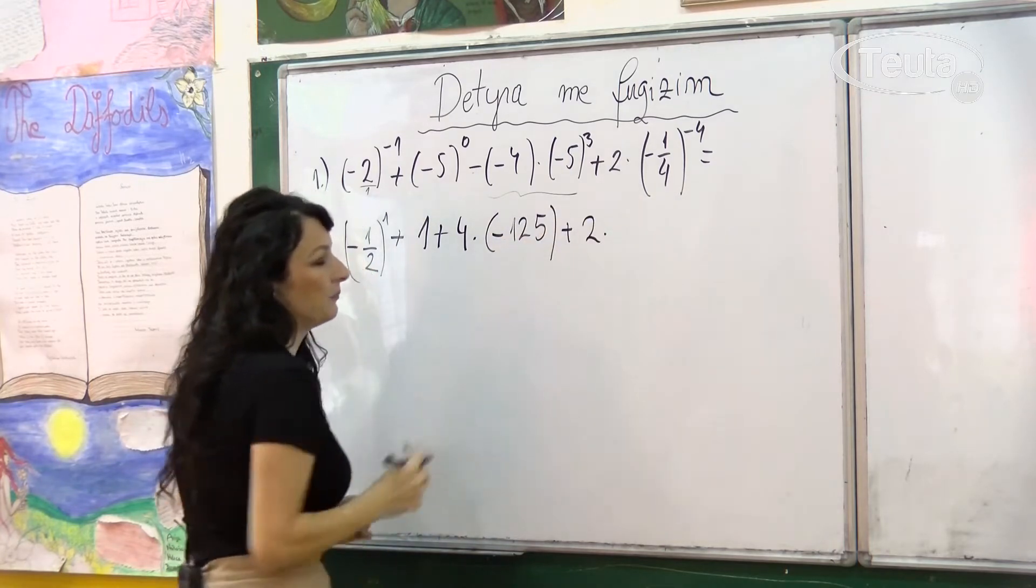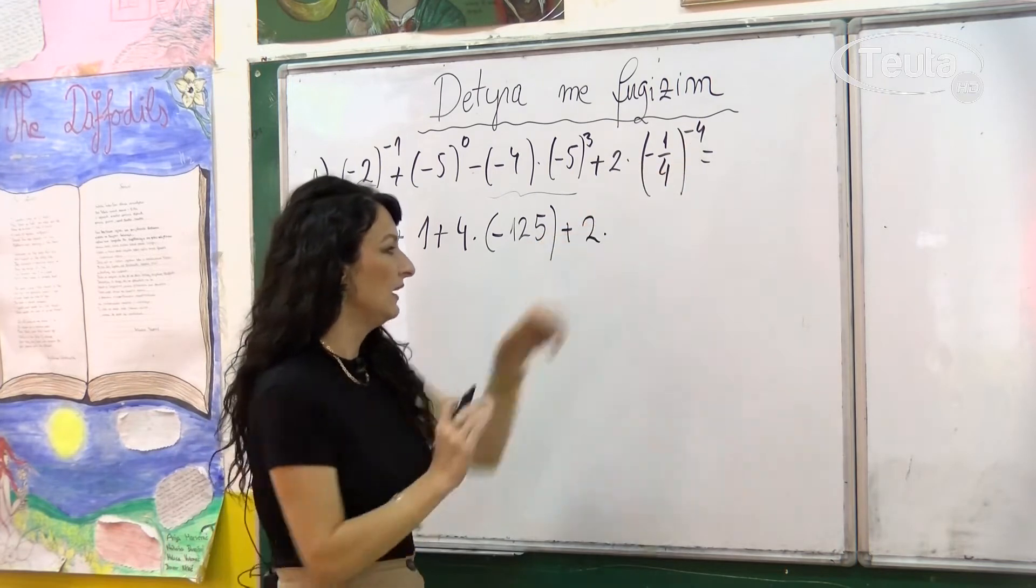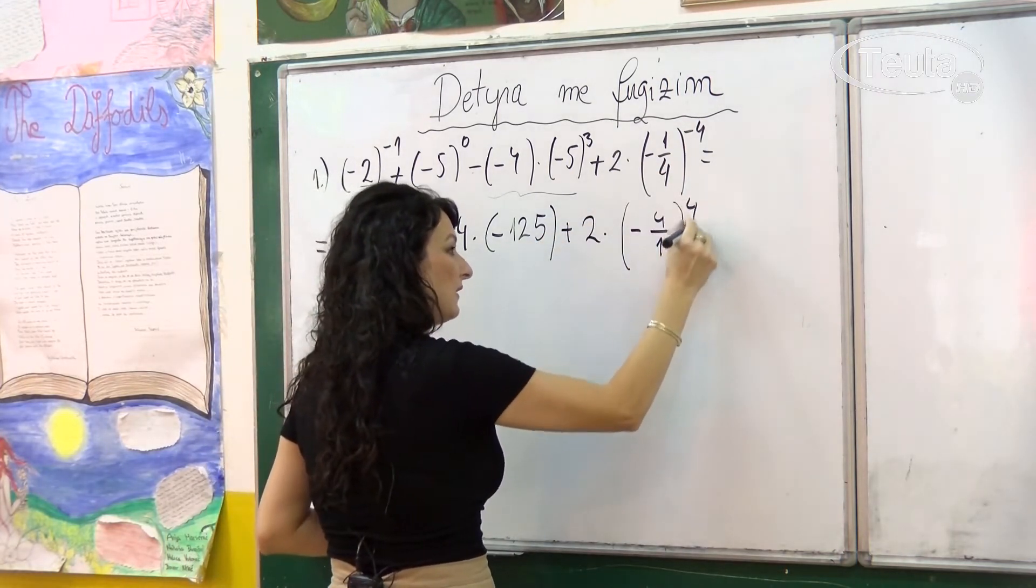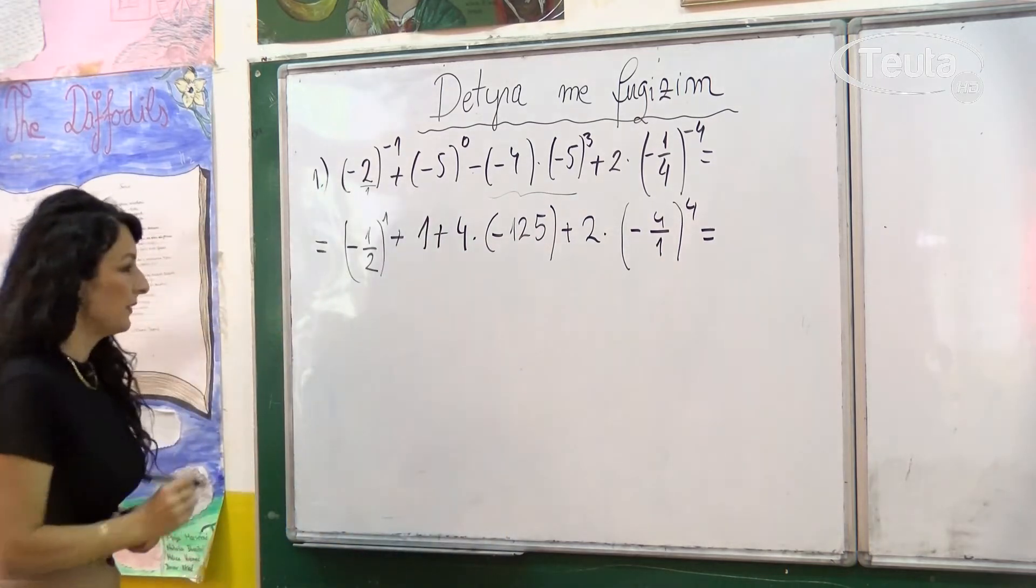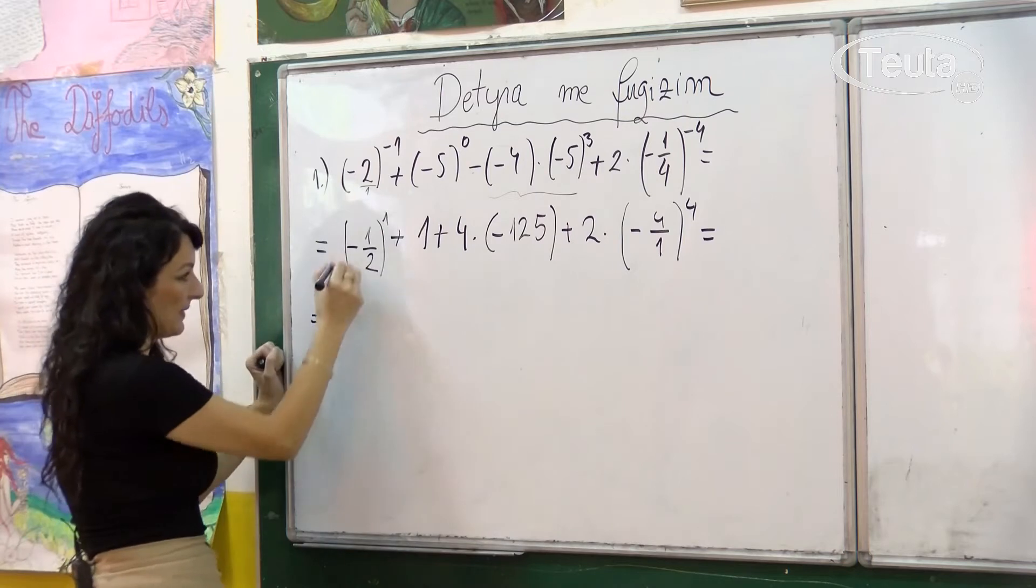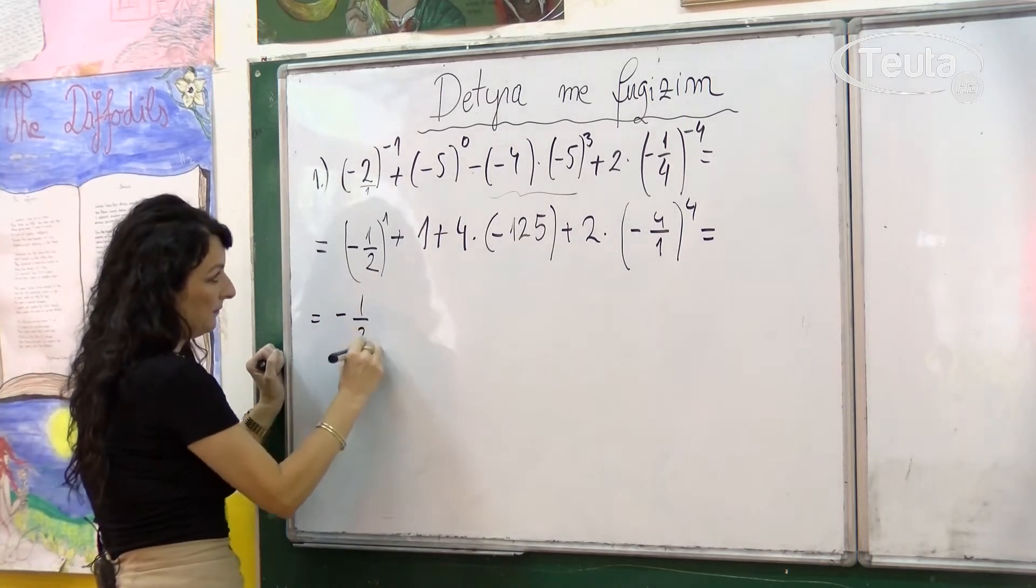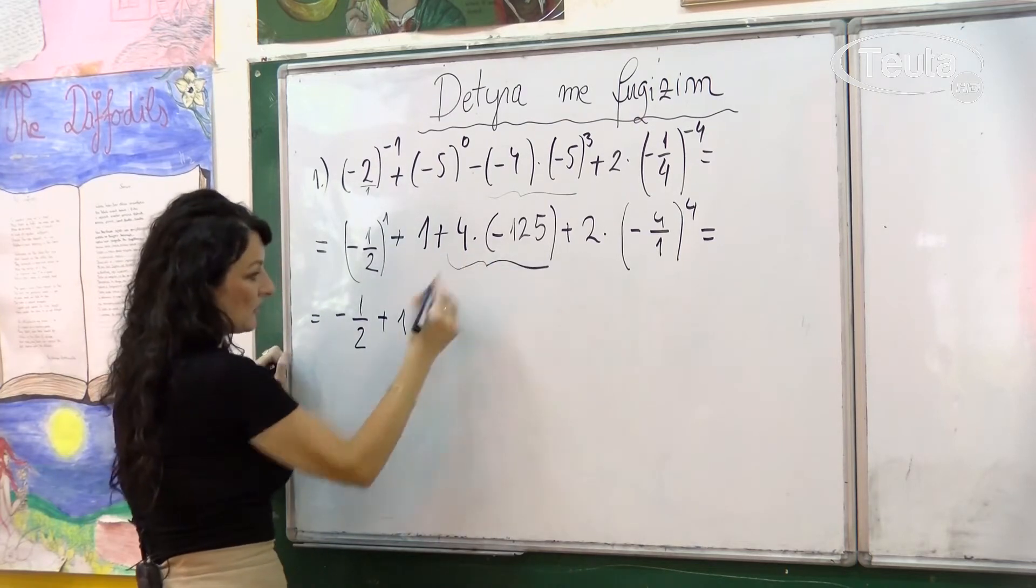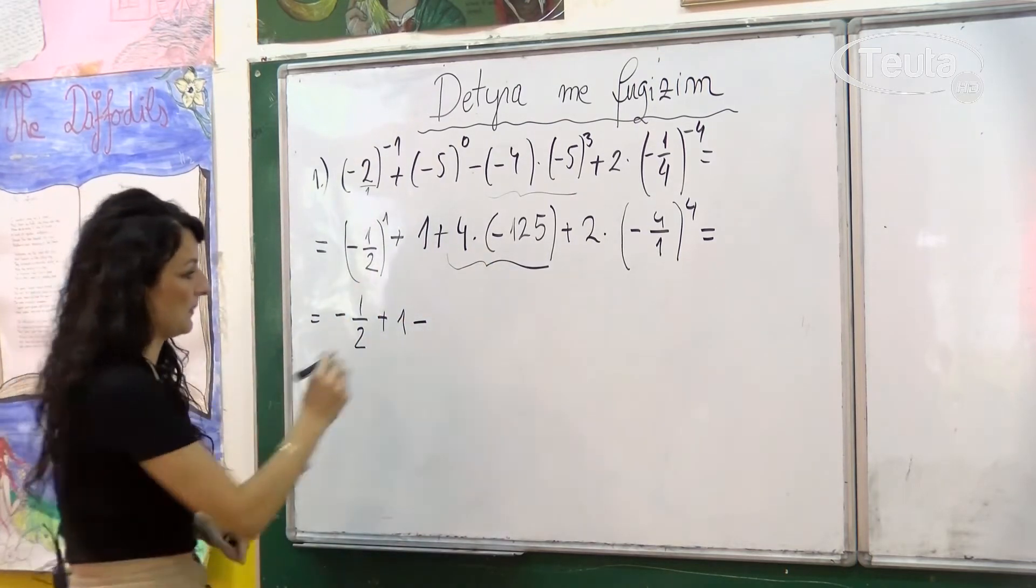Plus 2 herë, po ashtu këtu kemi eksponent negativ, lirohemi nga ai, pra minus 4 thyesë për 1 në fuqinë e 4. Në veprimin tjetër do të lirohemi nga fuqitë dhe do të shumëzojmë ku mundemi të kryejmë këtë veprim. Këtu kemi minus 1 e 2 ta, plus kemi 1 dhe kemi shumëzimin, plus e minus janë minus, 4 herë 125 janë 500.